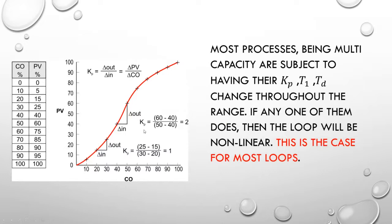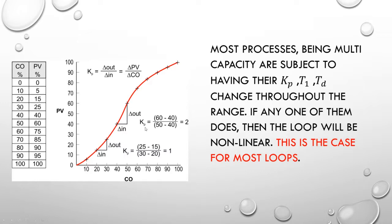Most processes culminate with the characteristics of an integrating, first order, and dead time process, which leads them to be largely multi-capacity processes. As such, they are subject to having the KP, T1 time, and dead time change throughout the range. If any one of these does, then the loop will be non-linear. As I move this triangle up and down the line, I get different gain values. This is important because we have to select a gain value that works well in the operating range we intend to run in. It will run best there, but differently in other operating ranges.